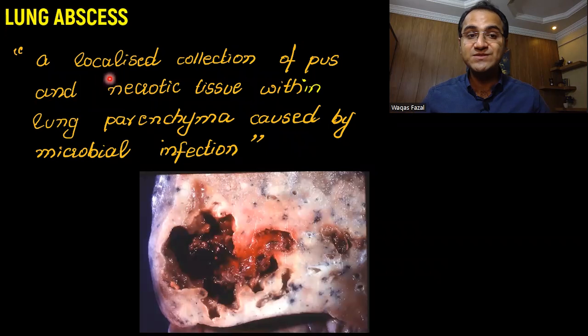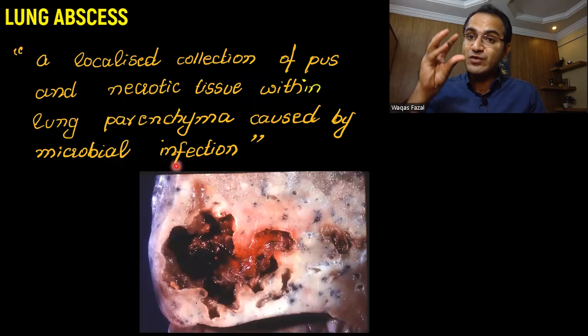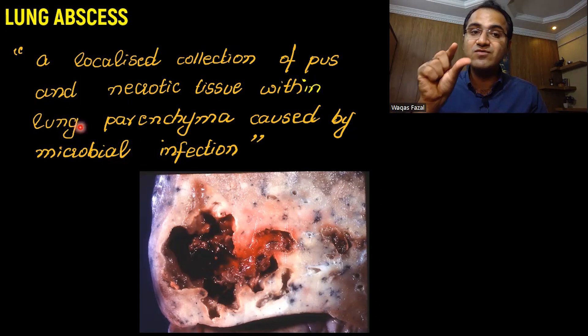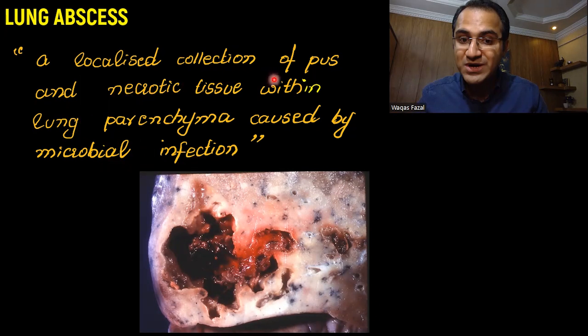What is lung abscess? Lung abscess is basically a localized collection of pus and necrotic tissue within the lung parenchyma caused by a microbial infection. Infection by microbes causes destruction of the lung parenchyma and lung tissue, resulting in the formation of localized pus.